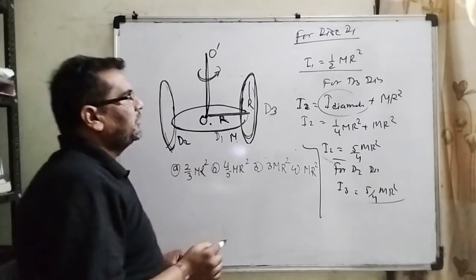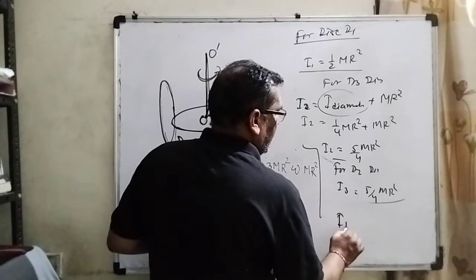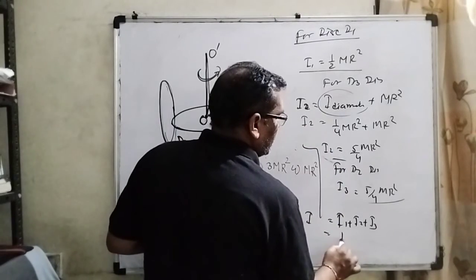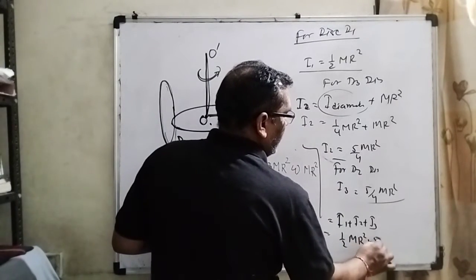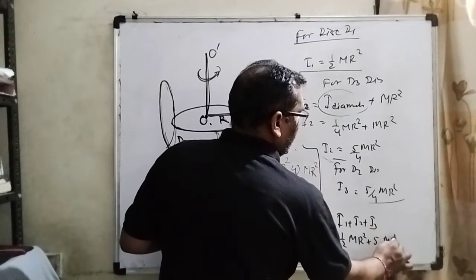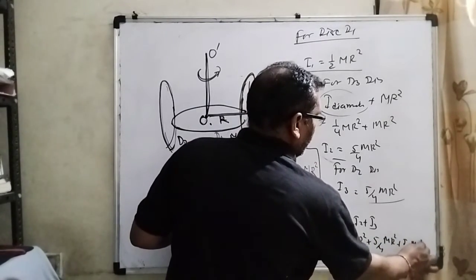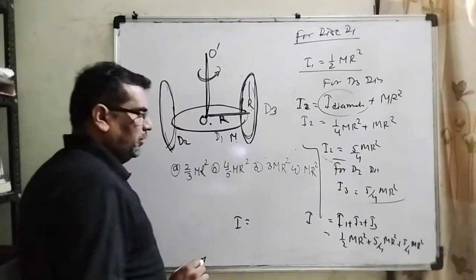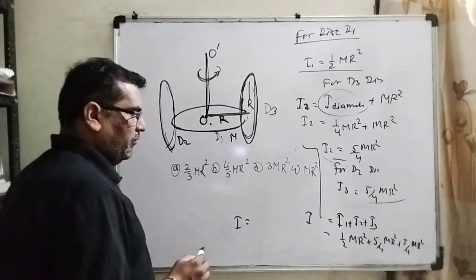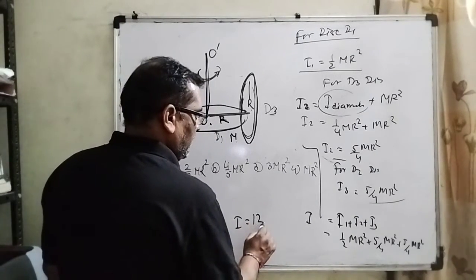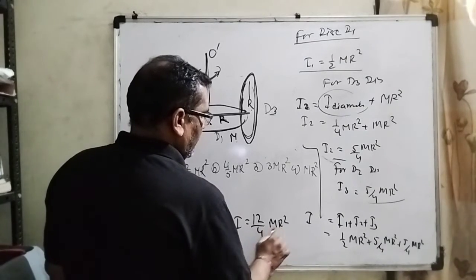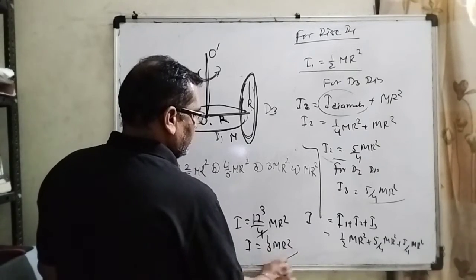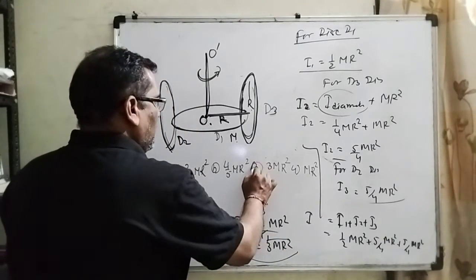Now moment of inertia of the whole system. I1 plus I2 plus I3. What is I1? 1/2 MR², 5/4 MR², 5/4 MR². Then how much? Total I equal to 5, 5, 10 and 2, 12/4 MR². 4, 1 is 4, 4 is 12. Then I equal to 3MR². So our third option is correct.